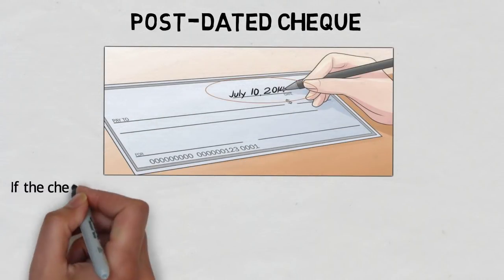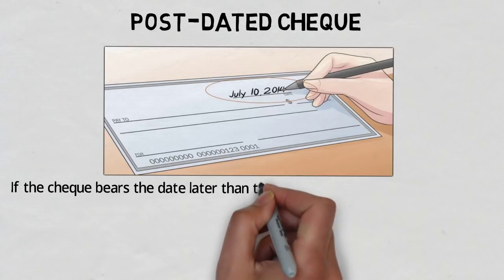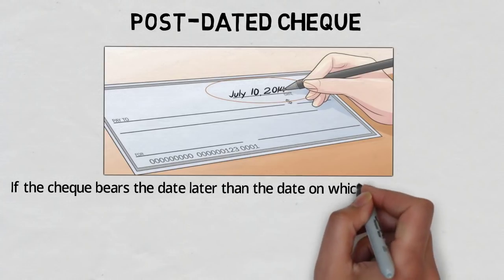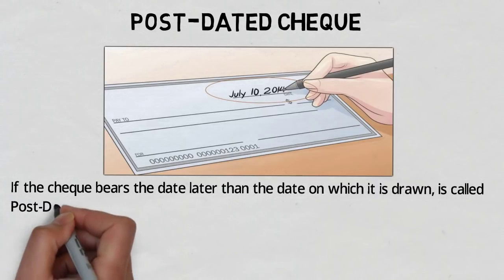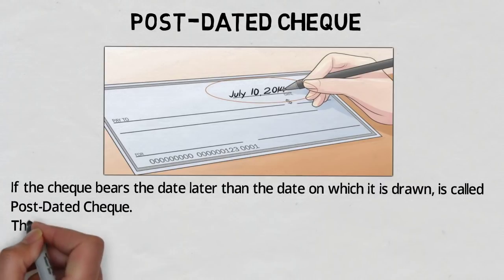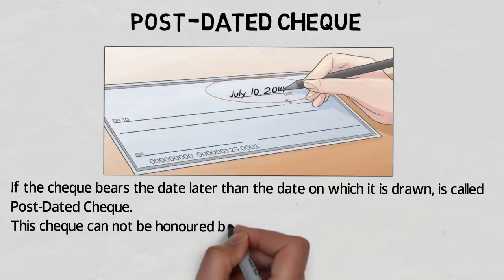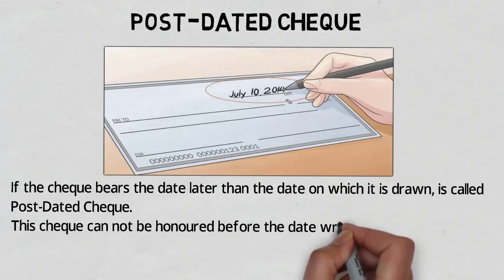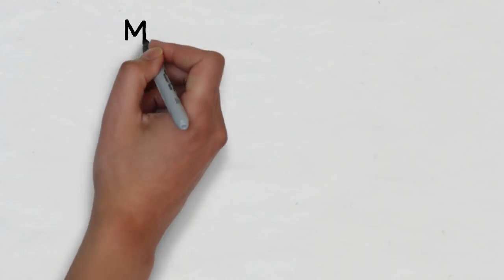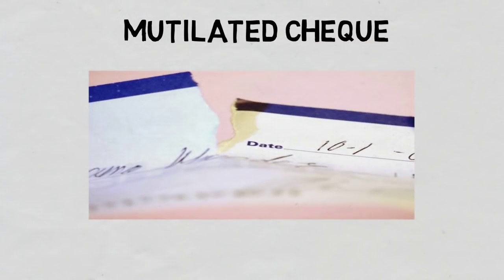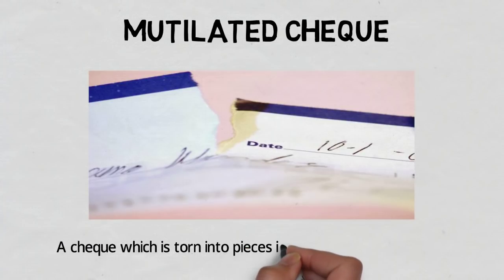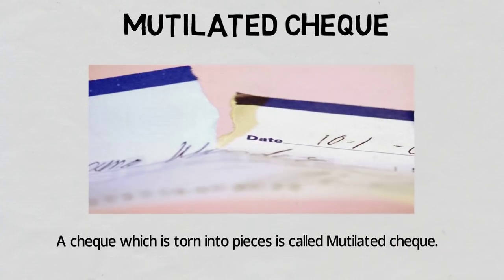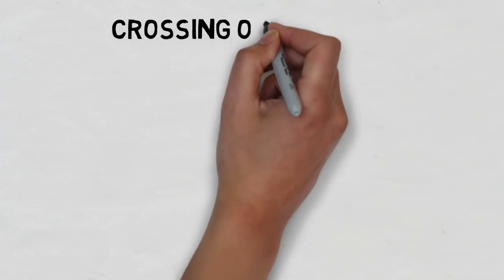A post-dated check bears a date later than the date on which the check is drawn; it is called a post-dated check. This check cannot be honored before the date written on it. The last type is the mutilated check — a mutilated check is a check which is torn into pieces and is not acceptable by the bank.